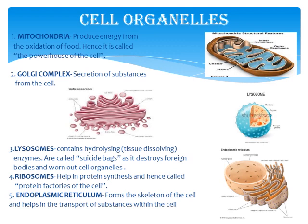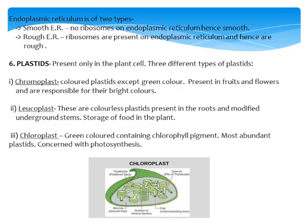Endoplasmic reticulum is of two types: smooth ER and rough ER. Smooth ER has no ribosomes on it, hence it is smooth in structure. Rough ER has ribosomes on it, making it rough in appearance. Remember, in your examination script you will write the full form — endoplasmic reticulum — not the abbreviation ER.